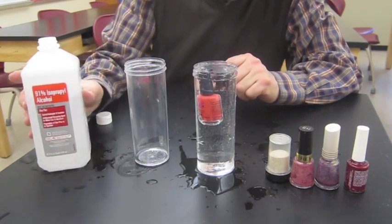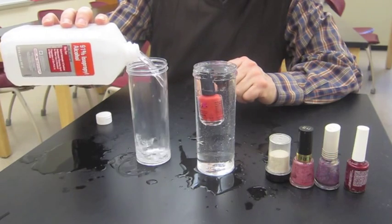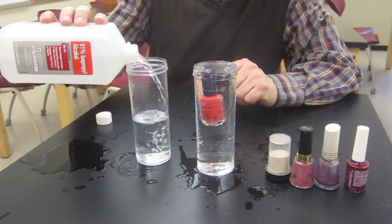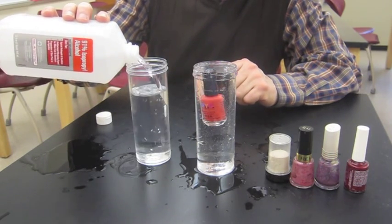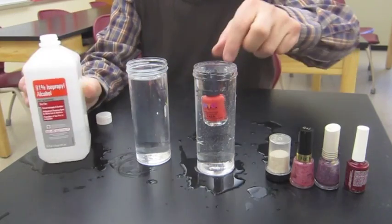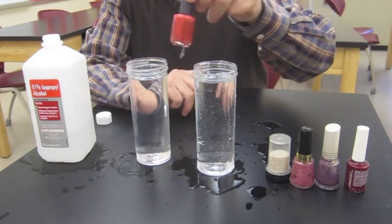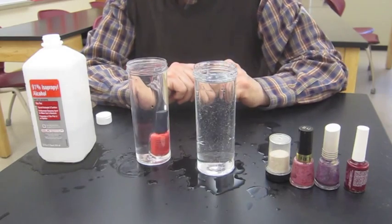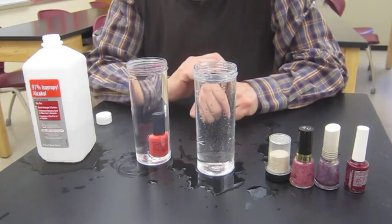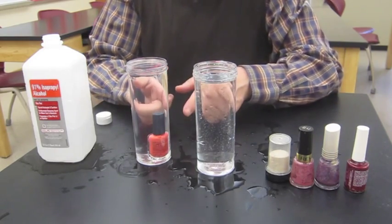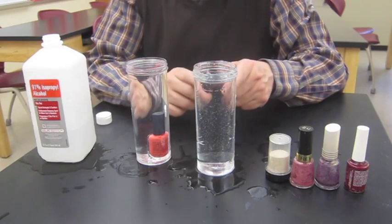Now in this container, we're going to use isopropyl alcohol. Now let's try a bottle on that and see what happens. It goes down and it goes down rather quickly, which means that the alcohol must be much less buoyant than the water is.